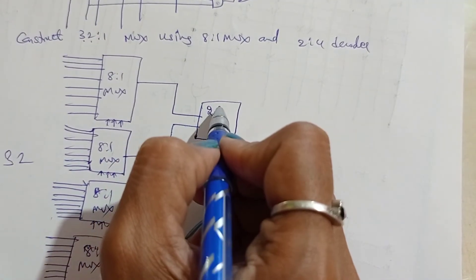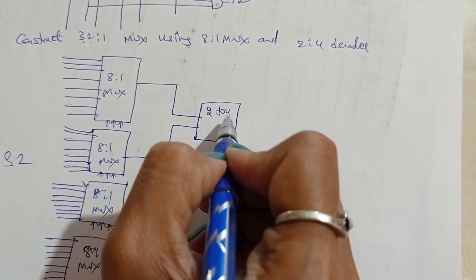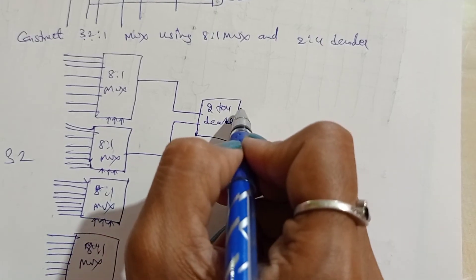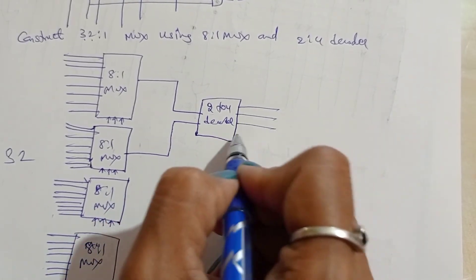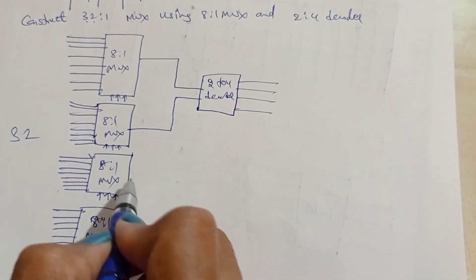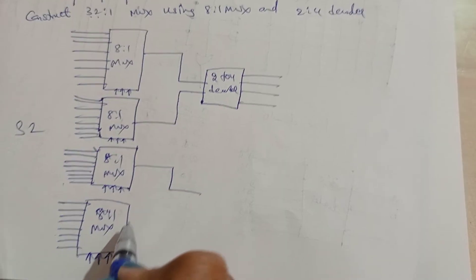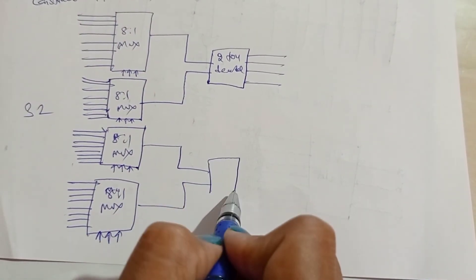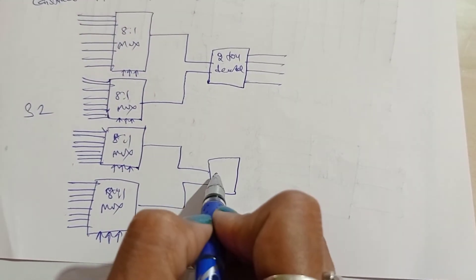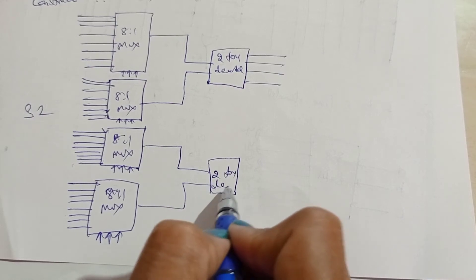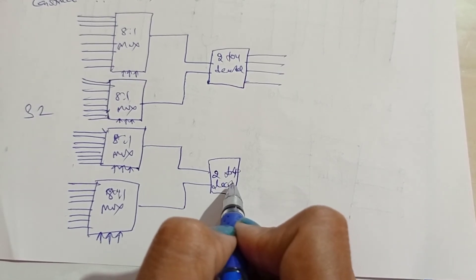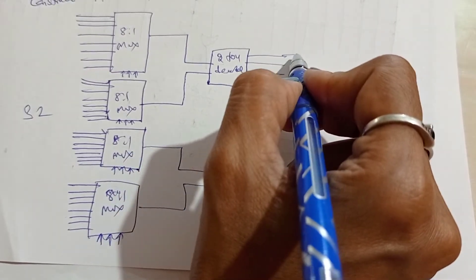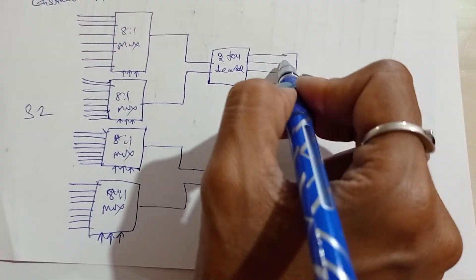Now for the 2 to 4 decoder, it provides outputs 1, 2, 3, 4. Connect all the decoder outputs to the enable inputs of each of the four 8 is to 1 MUX units.